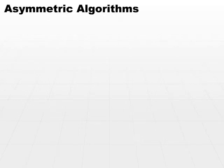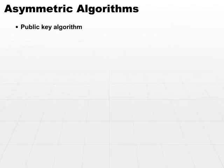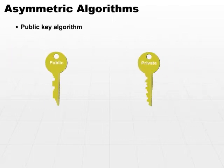The other common model is an asymmetric algorithm. Asymmetric algorithms are also called public key algorithms. They get this name because there are actually two keys: a public key and a private key.